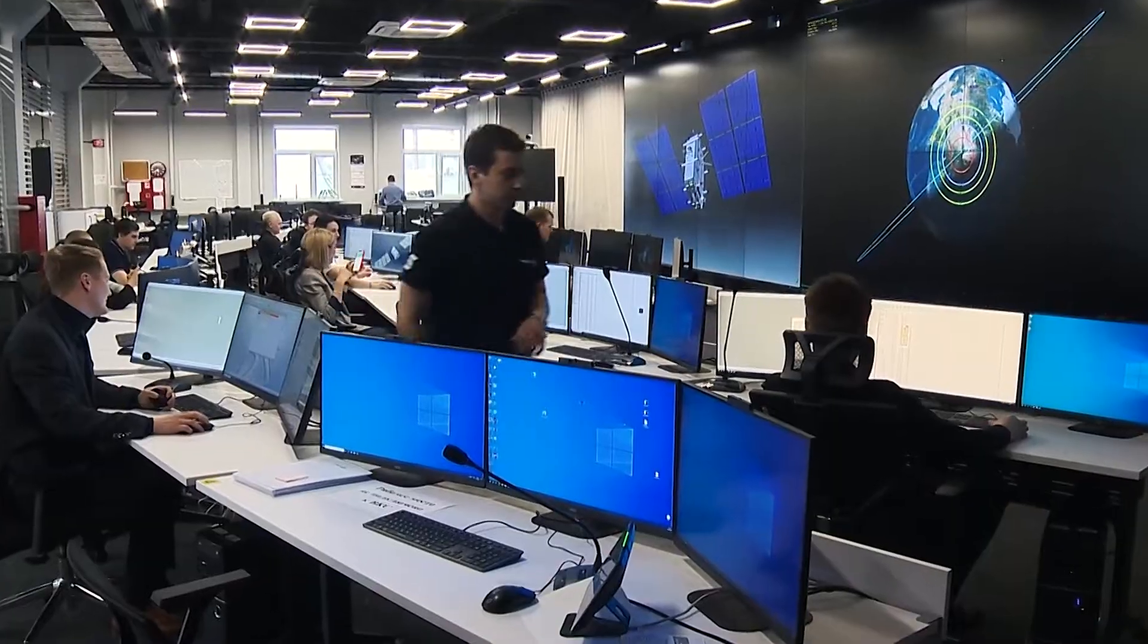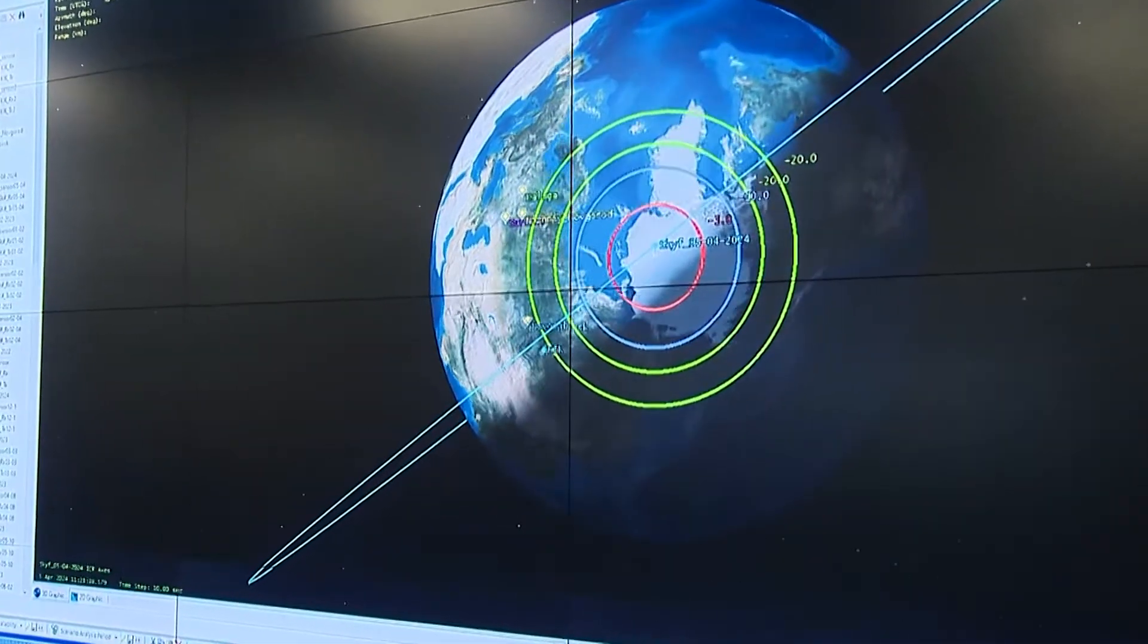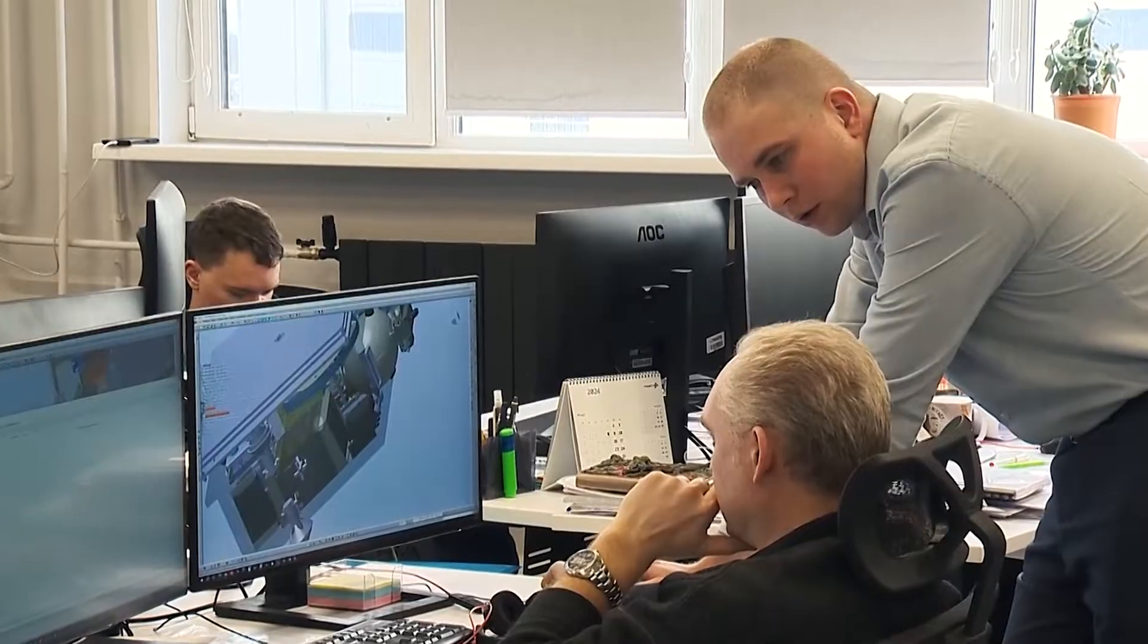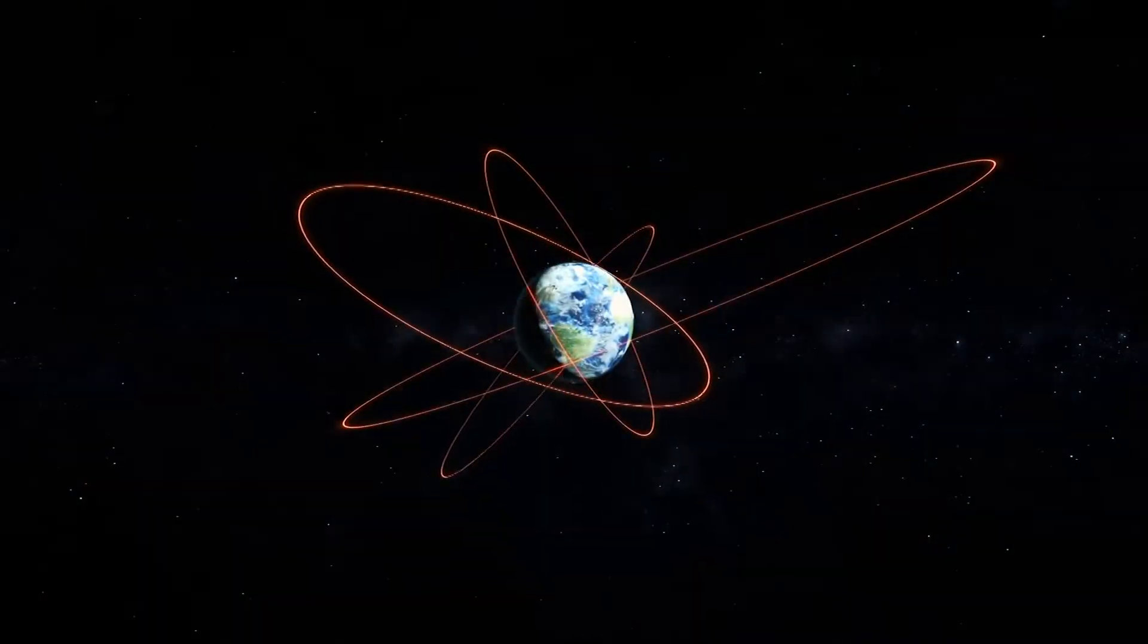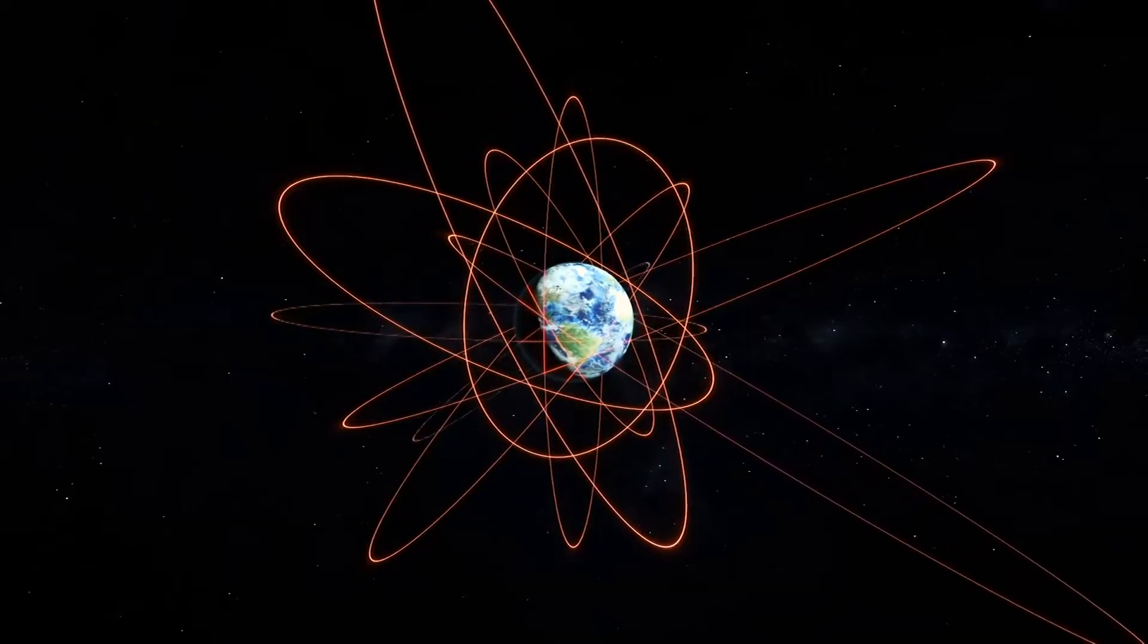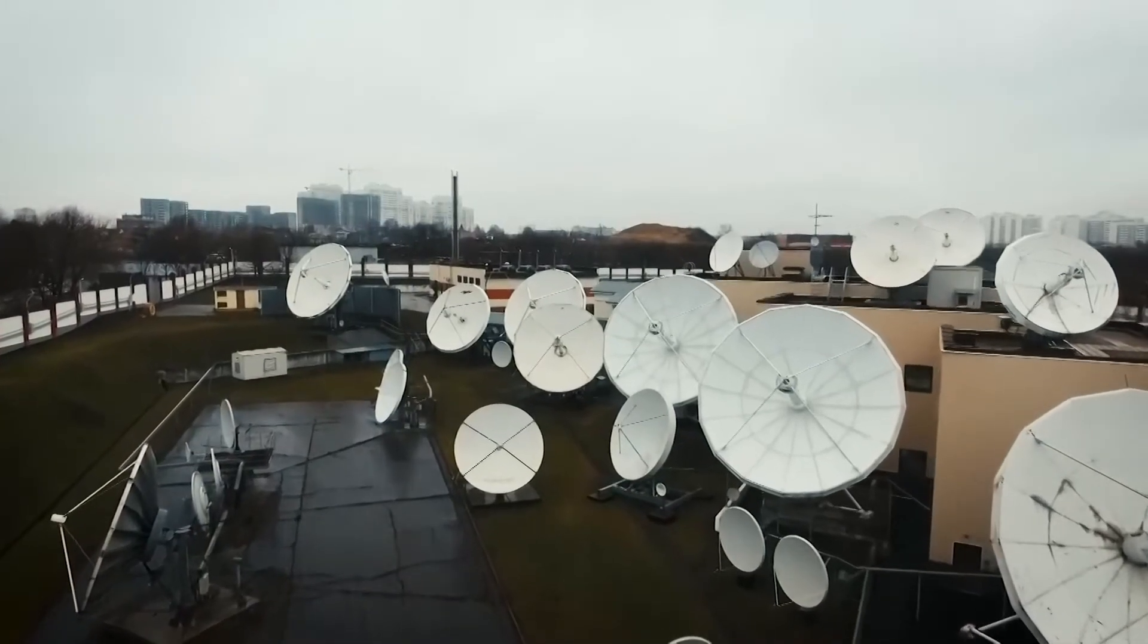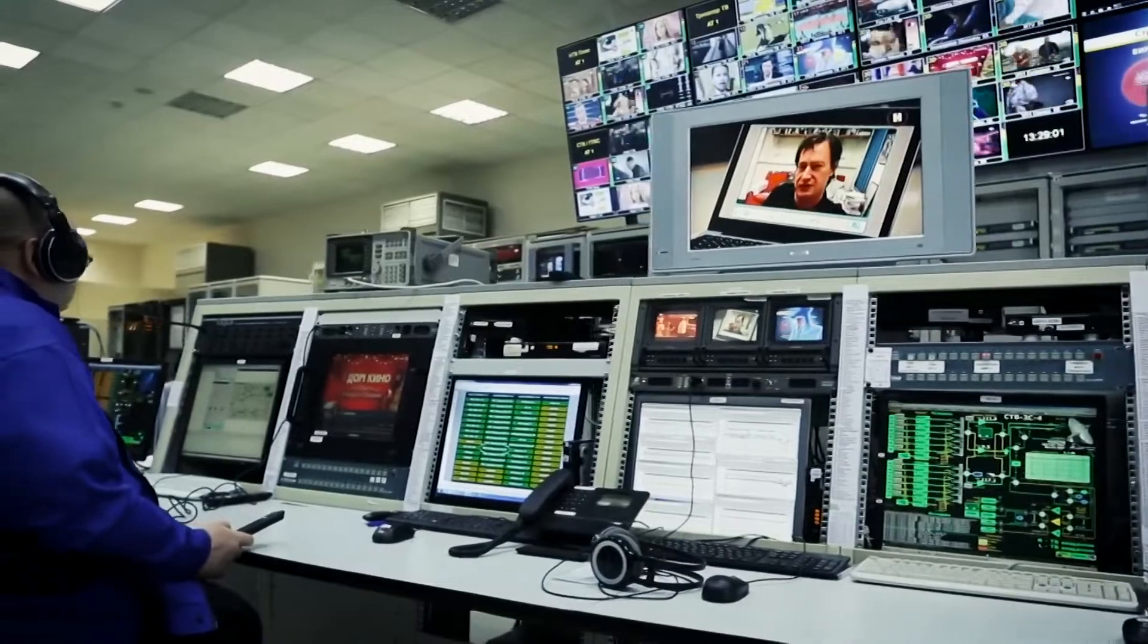Each satellite's orbit is predetermined. The choice of orbit is made before designing the spacecraft and depends on the tasks that it's going to perform in space. High elliptical orbits, as well as the geostationary orbit, are mainly used for communication and broadcasting satellites.